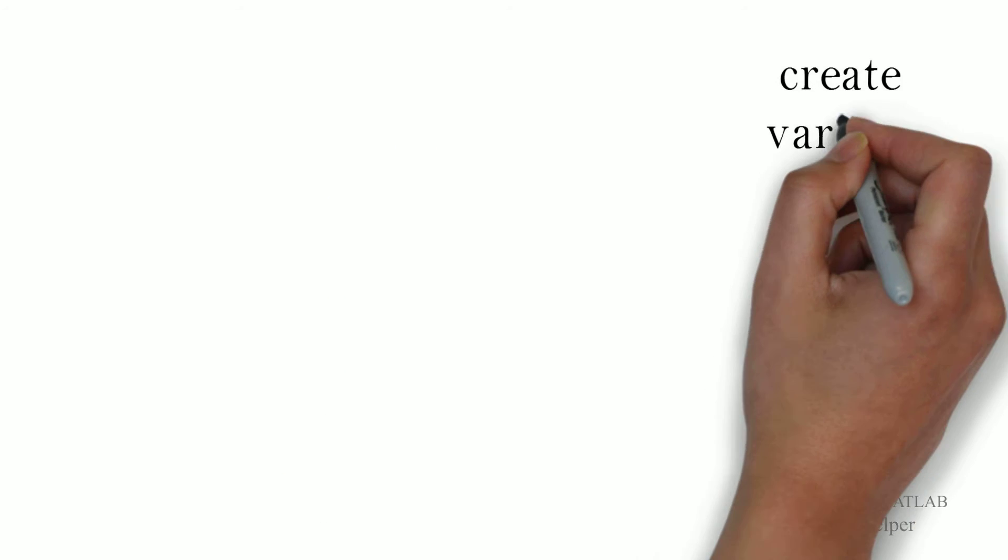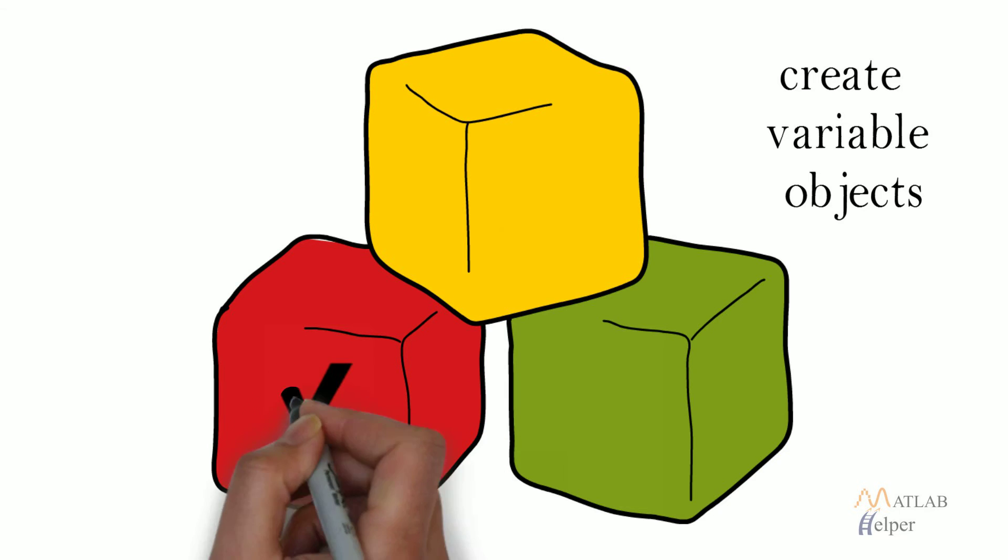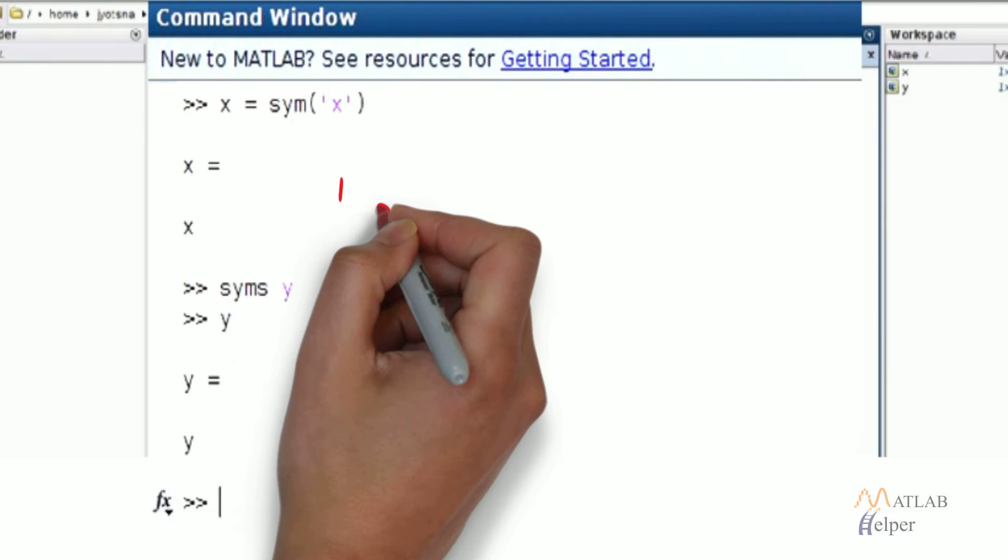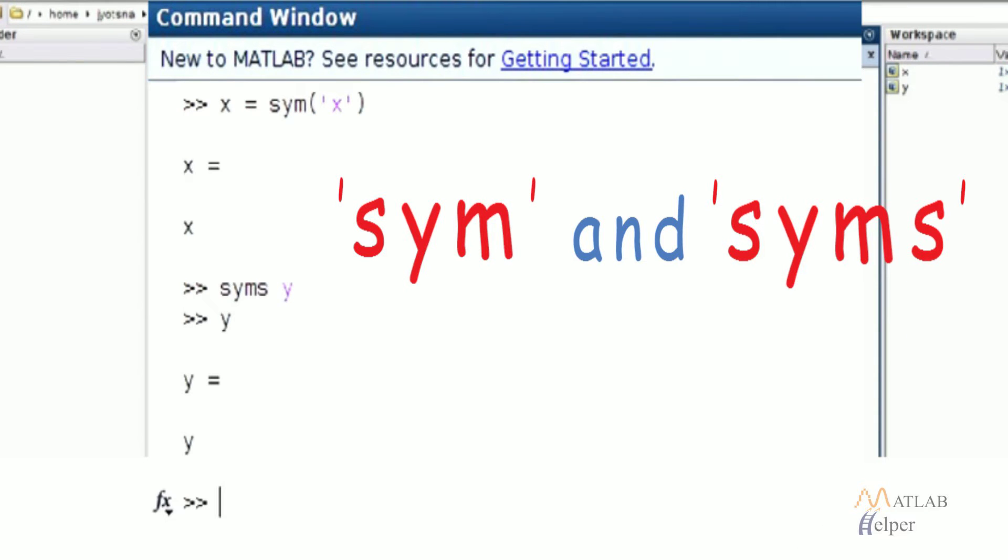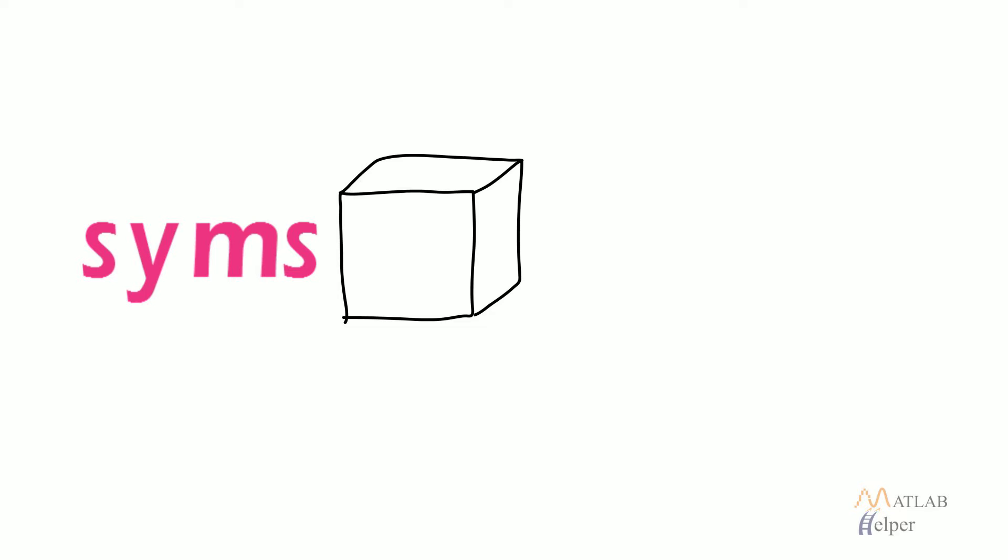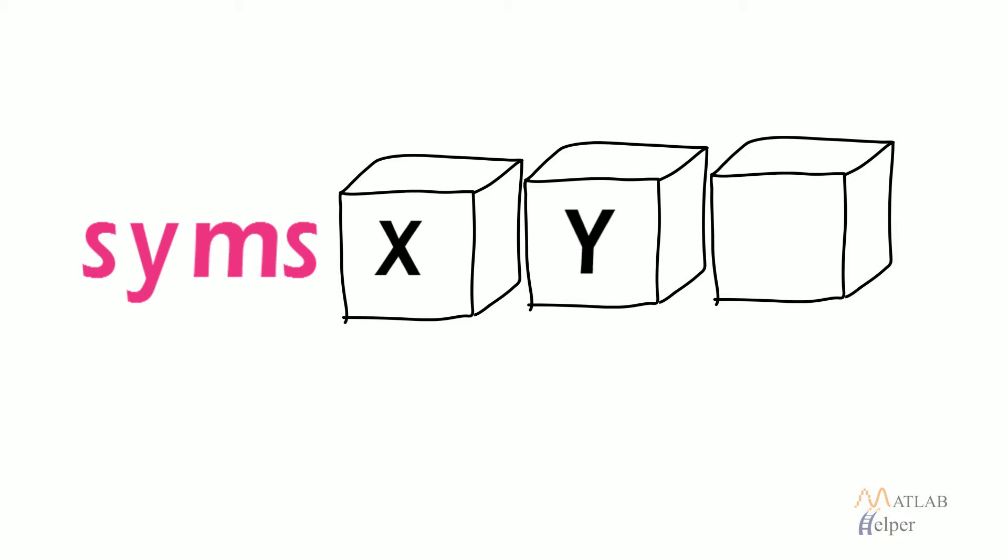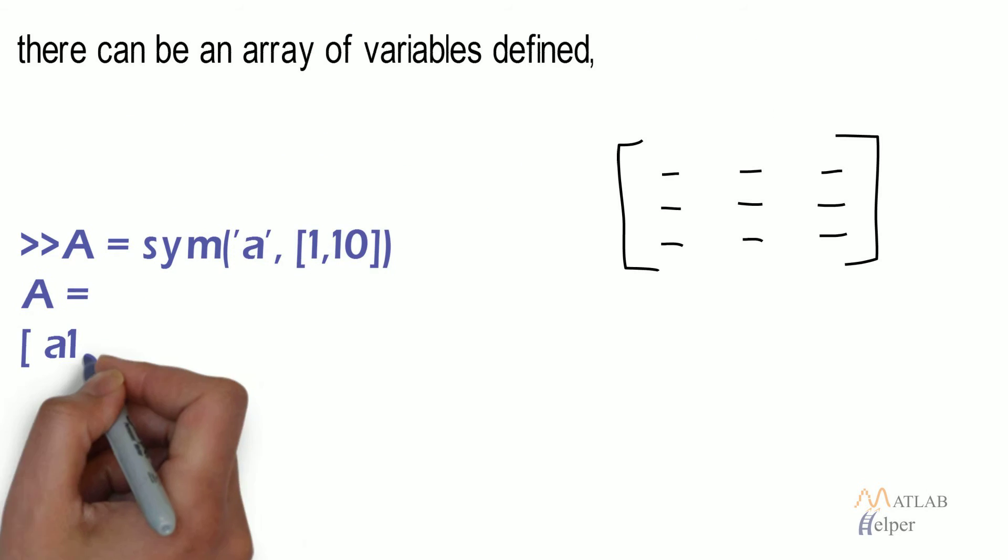Like declaring constant values, we can also create variable objects by the process followed in the image shown. We can make use of sym and syms both to create a variable symbolic object. It is also possible to declare multiple variables in one command like syms xyz or there can be an array of variables defined.